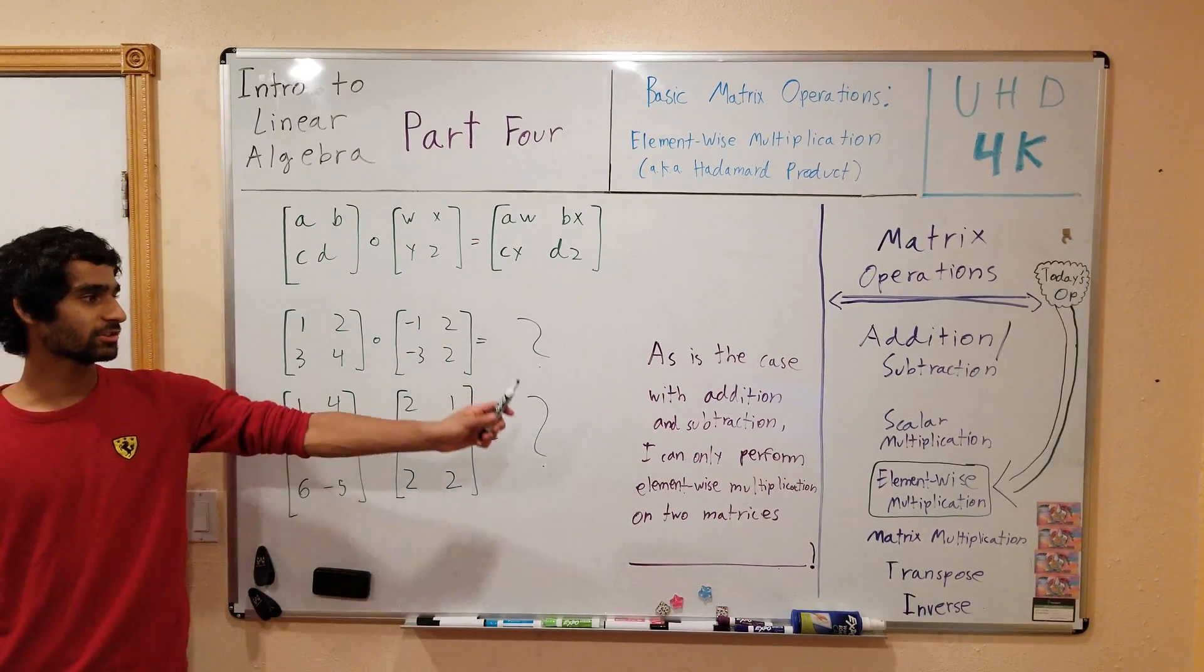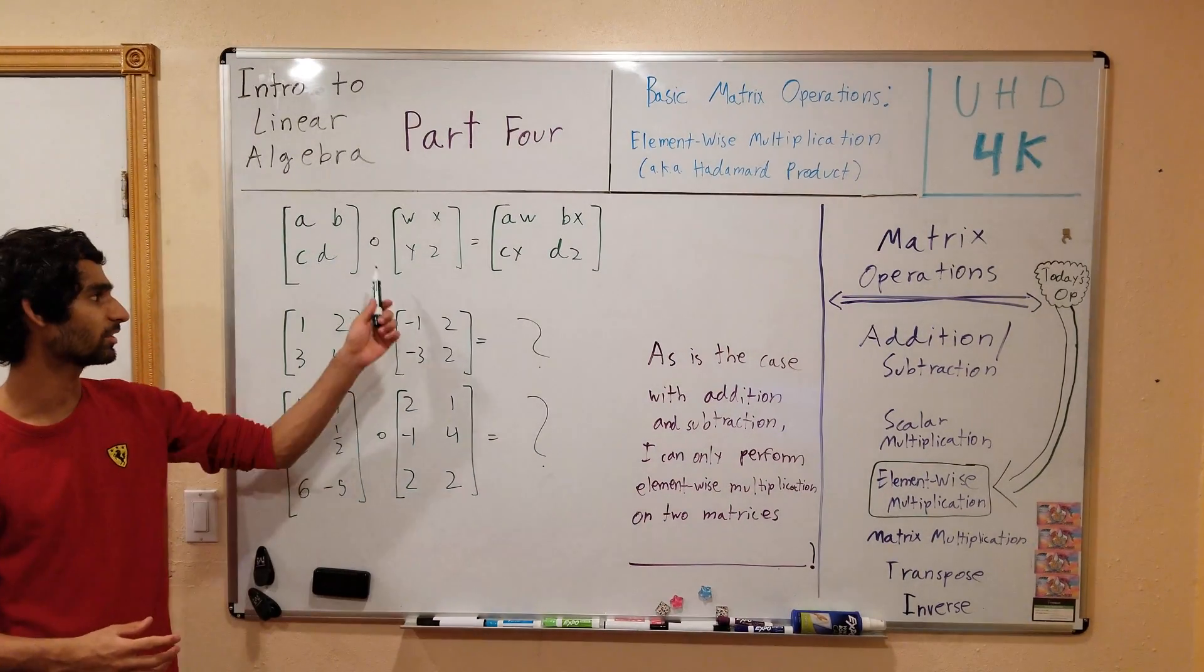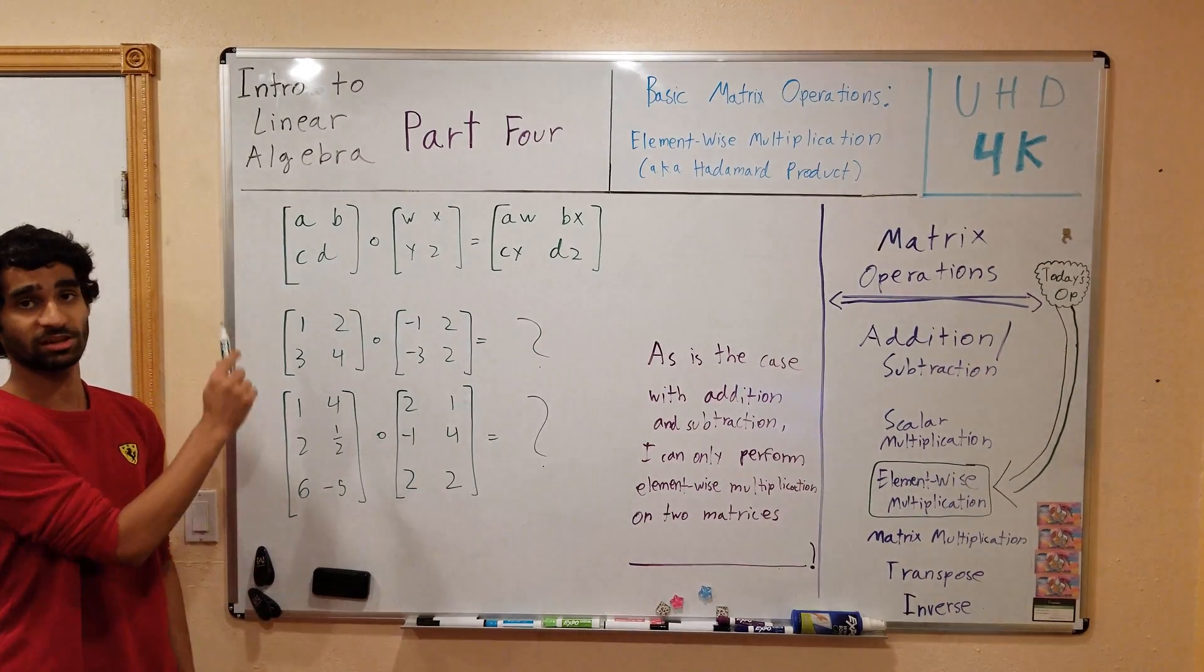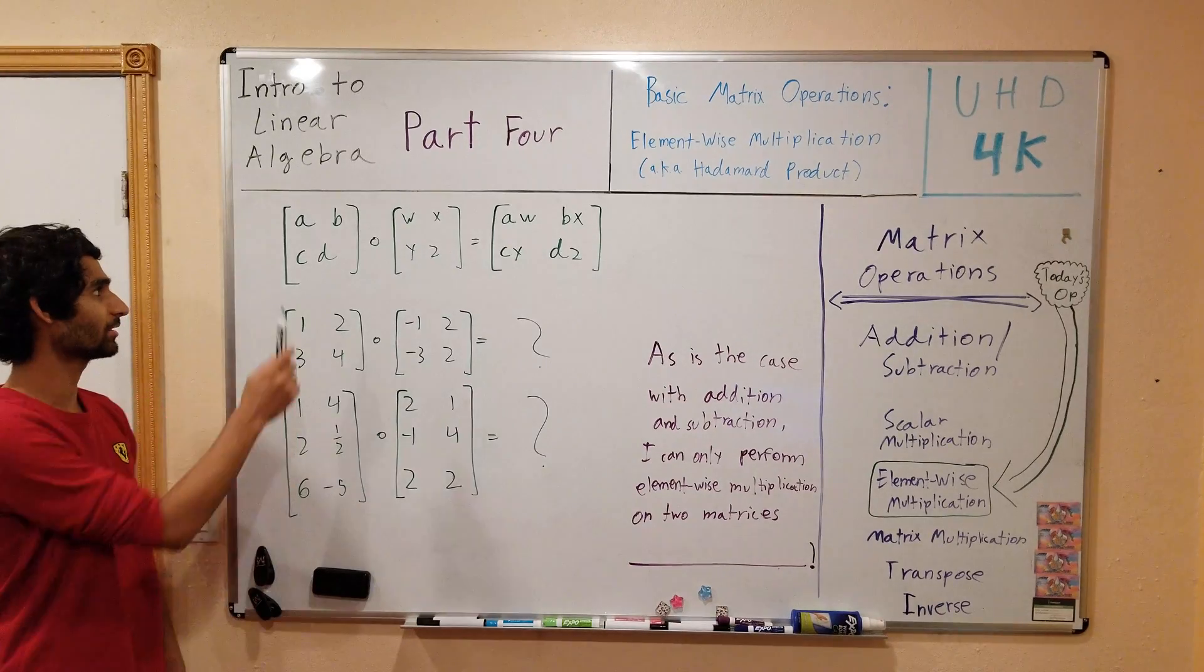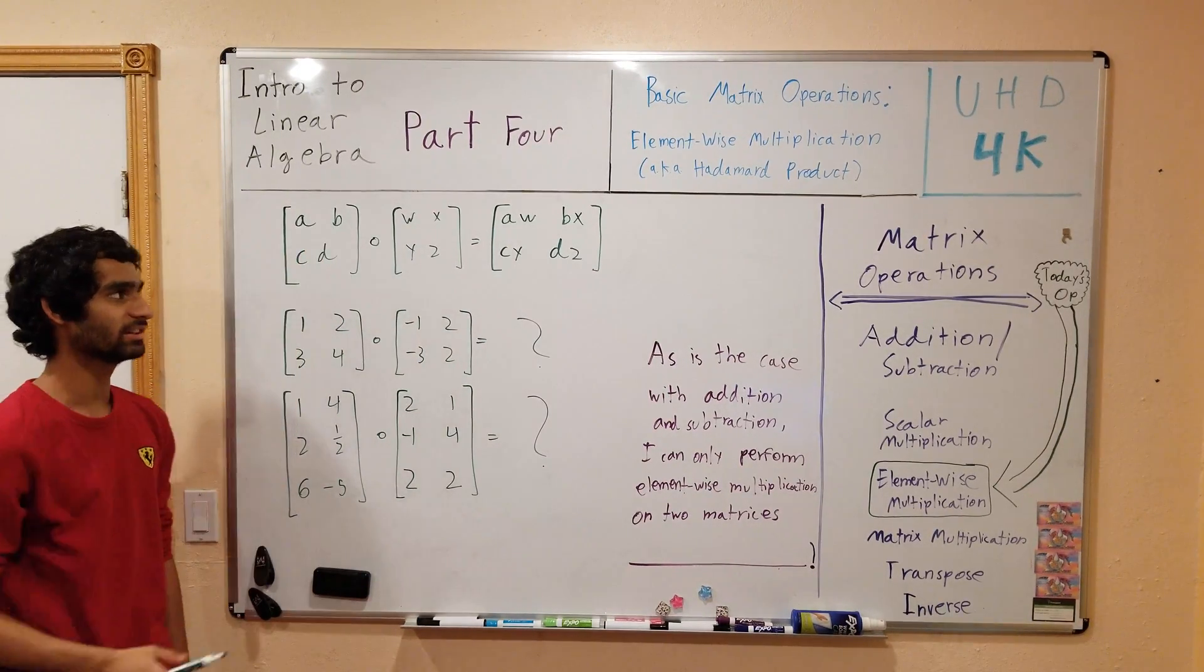So we only looked at scalar multiplication, but there's some other multiplication associated with matrices: the Hadamard product. This is very similar to the matrix addition or subtraction we did a couple videos back, except instead of adding or subtracting the individual elements, we will be multiplying the individual elements.